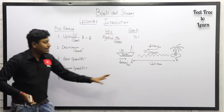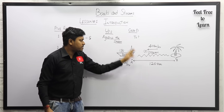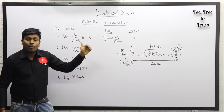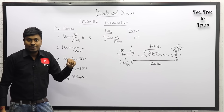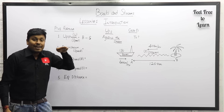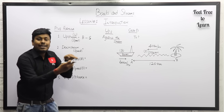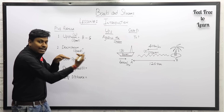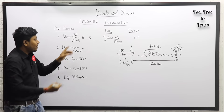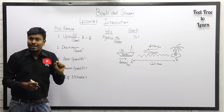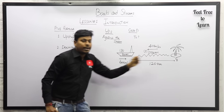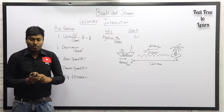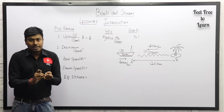In this example, all data are given: stream speed, boat speed, and total distance of 120 km. Our target is to find the time. First, decide whether the case is upstream or downstream. Since we are traveling against the stream, it is case number one — upstream. The total speed of the boat is boat speed minus stream speed: B - S.